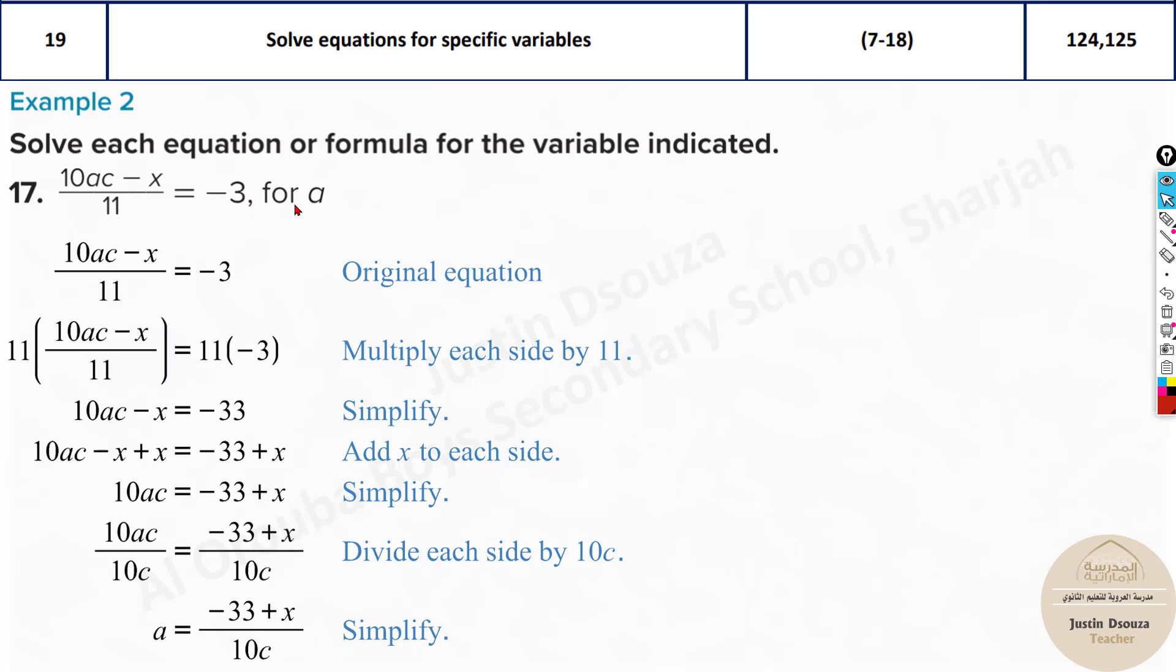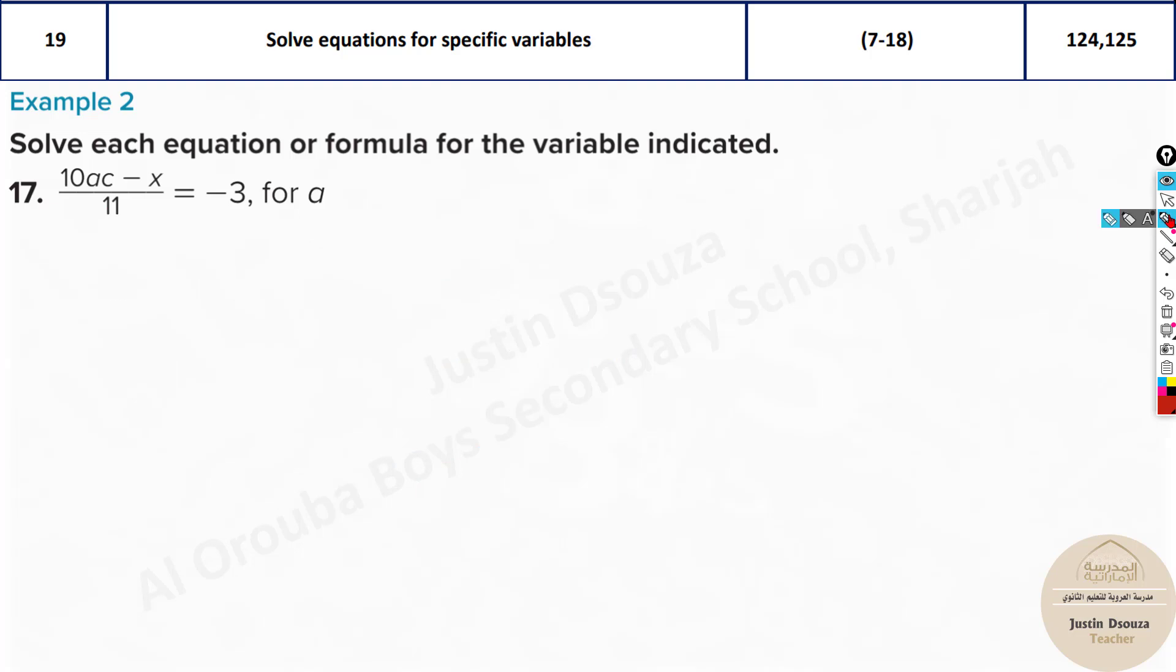And over here, this is the answer. Now, this is also easy. You just have to do for A. So what you need to do over here is, first take the 11 to the other side. It will be 10AC minus X equals minus 33 because minus 3 times 11 is minus 33. Take X to the other side. See, over here, it will be minus 33 plus X. Now, if you're thinking why I don't take 10. See, whenever you have such terms, the outermost term, the 11 is the outermost term. So 11 goes to the other side first. Now, what next over here? The outermost term is minus X because this is all together.